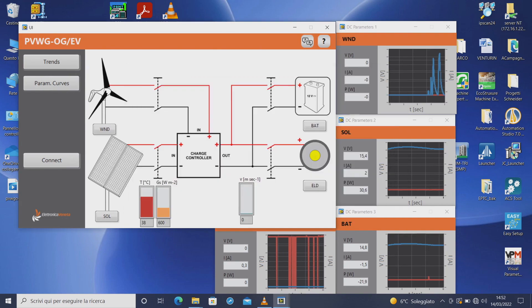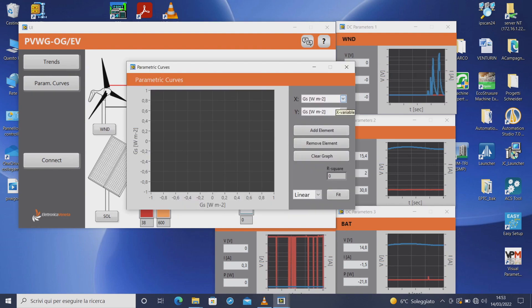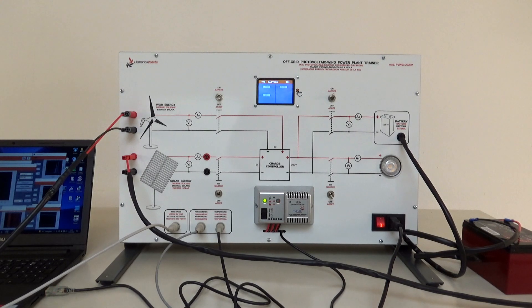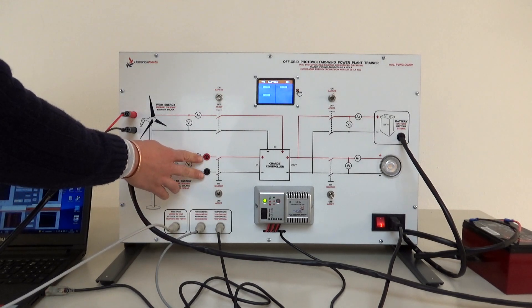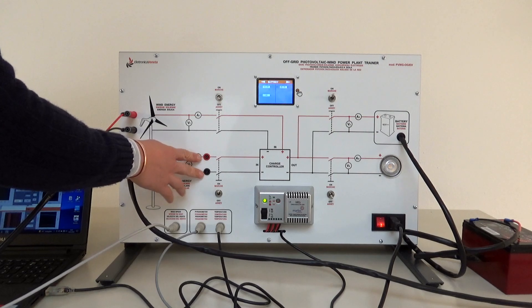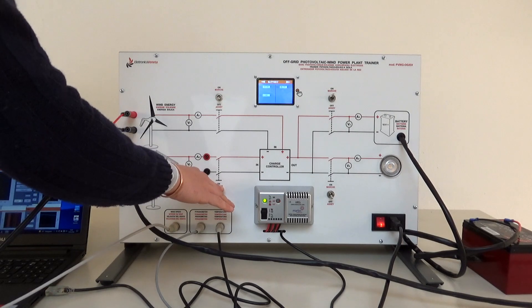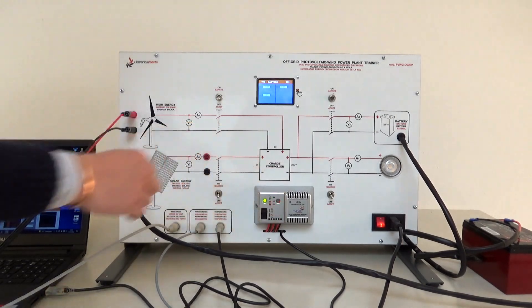If we want to perform parametric tests on our trainer we just go to parametric curves and we have this plot in which we can select which variable to show on the x and y axis and we can perform parametric tests by adding and removing one element per time. So if you want to perform, for example, the characteristic curve of the photovoltaic panel, you can connect our optional module PRH1 to these two terminals and then you can unselect the photovoltaic panel from the circuit.